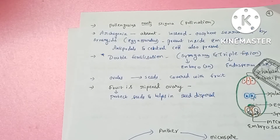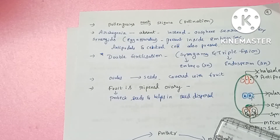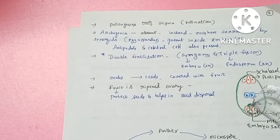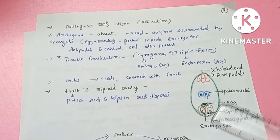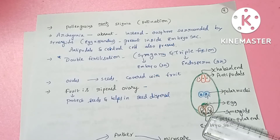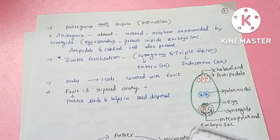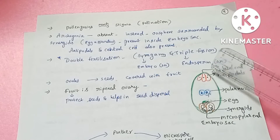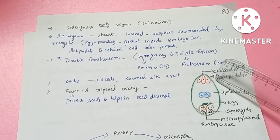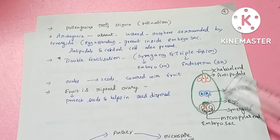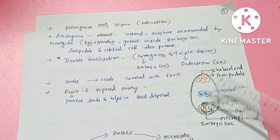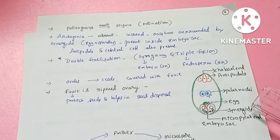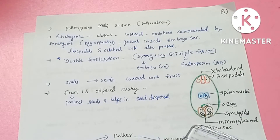In the female gametophyte there is the egg apparatus. In the embryo sac, the egg apparatus is located at the micropylar end and the antipodals are at the opposite end. The central cell contains the polar nuclei.